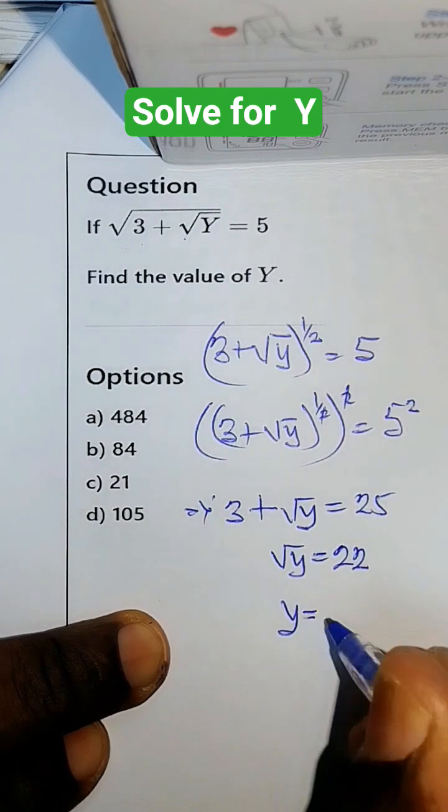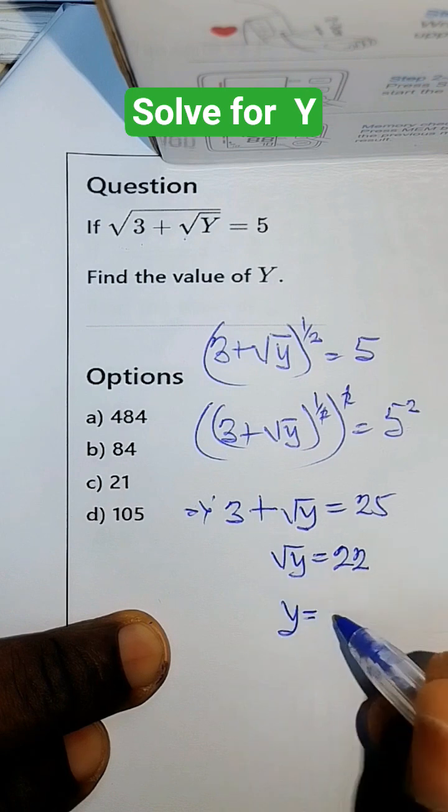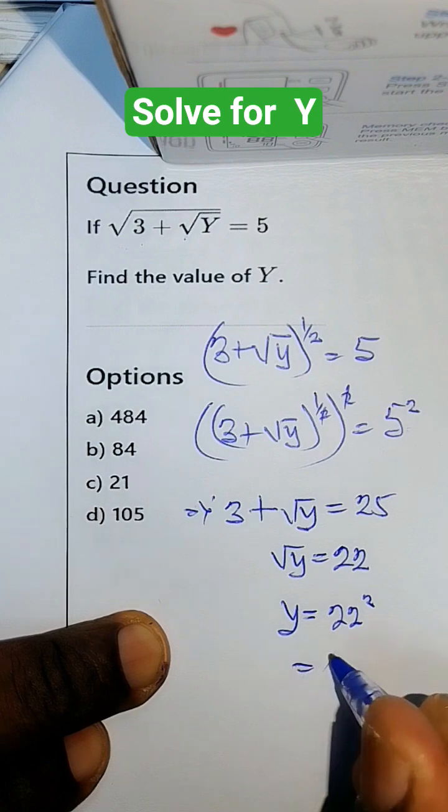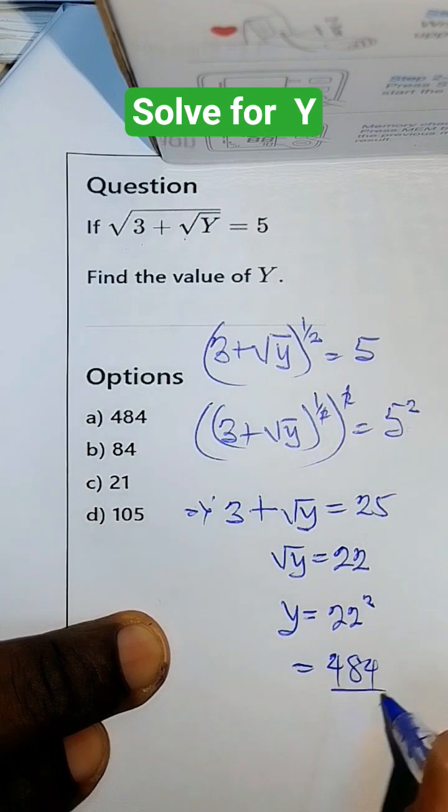So y equals, find the square of both sides, 22 squared. This gives us 484. We have our final answer.